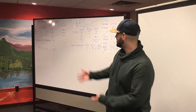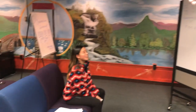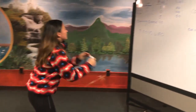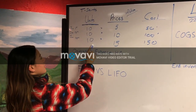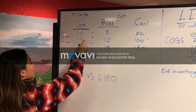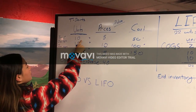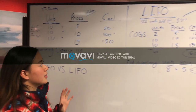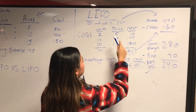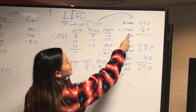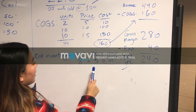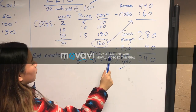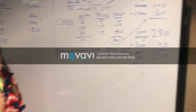Since Tom did such a good job presenting FIFO, would you like to do LIFO? Yes, please. So for LIFO, you actually take from the last order. Because it's twenty-two units, you also take from the second order and only two more from the first order. After multiplying by the prices, you get one hundred and sixty dollars, which is your COGS — cost of goods sold. Then for your ending inventory, you will only have eight units left over at the price of five dollars, so you'll have forty dollars of cost in the ending inventory.